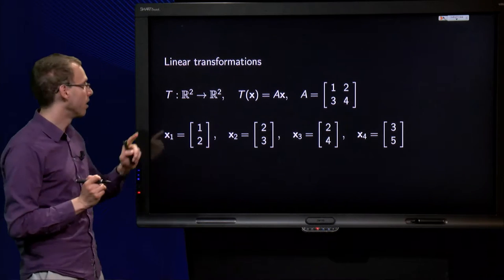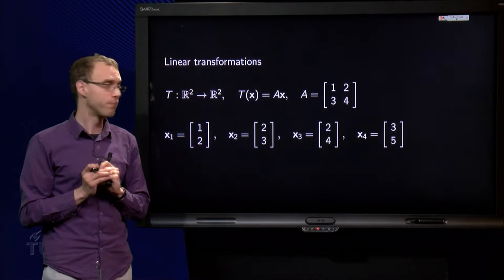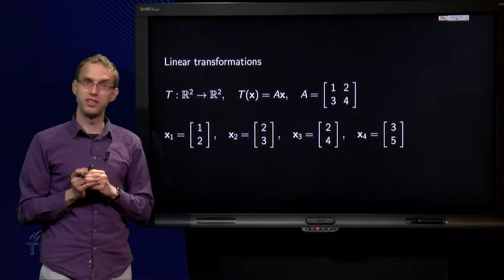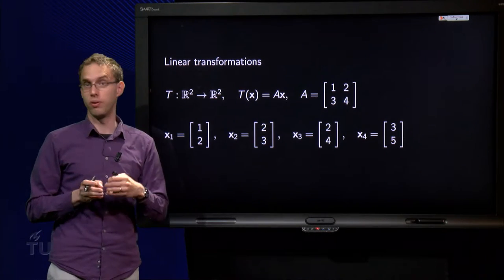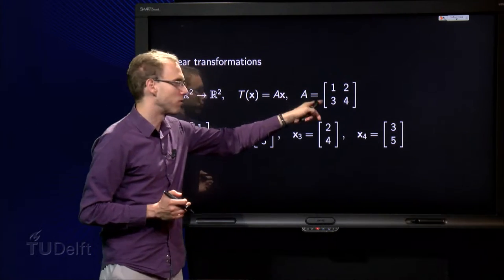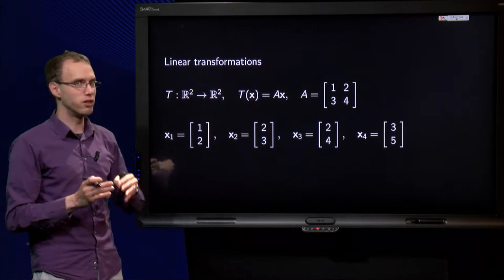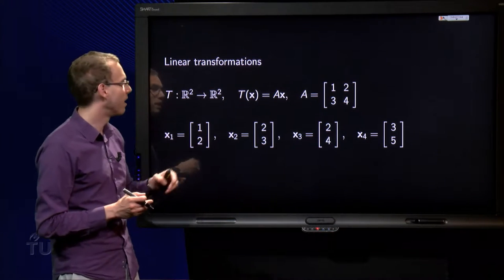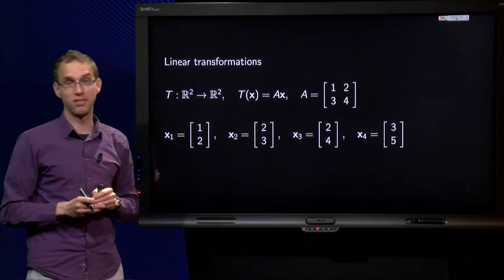We will see that using an example. We have a transformation T from R2 to R2, implemented by a 2 by 2 matrix A: 1, 2, 3, 4. The choice of A probably won't surprise you by now. T of x equals A times x.